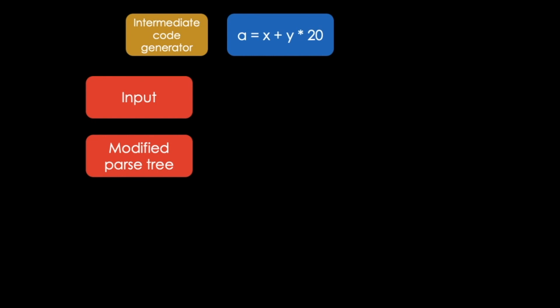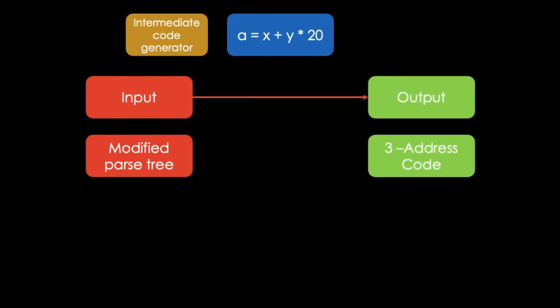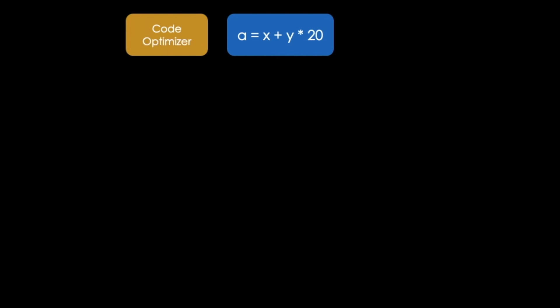Next, the intermediate code generator comes into play. Our modified parse-tree will serve as an input. It is converted into an intermediate code. In most cases, this will be a three-address code, also called TAC. So simply put, it separates our expression into different subsets of the expression as displayed here.